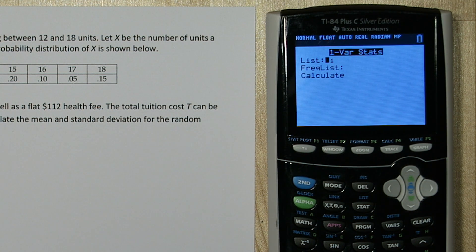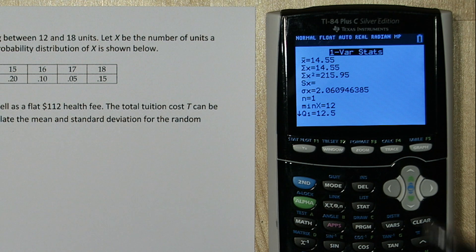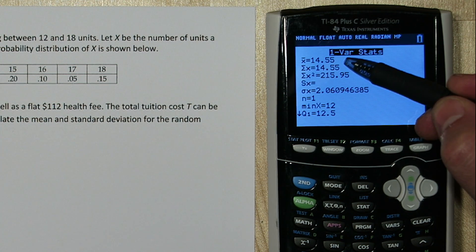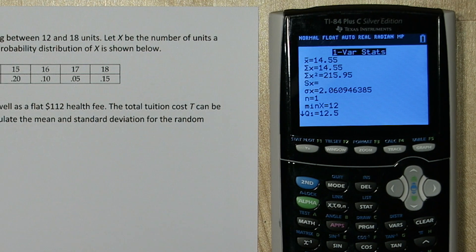Now for our list, we're going to use list 1, the number of units. And for our frequencies, we'll use list 2. Alright, that very first line right here is the mean, and down here is our standard deviation.